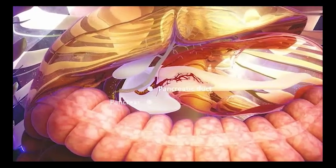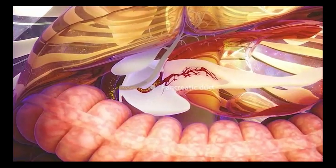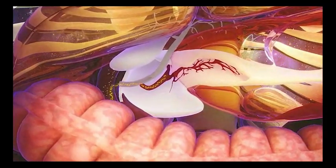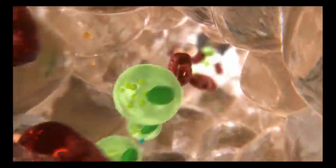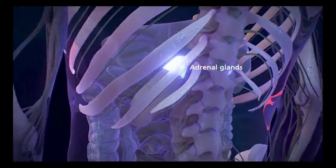The pancreas secretes insulin, which moves glucose out of the blood and into cells. Diabetes occurs when the body does not produce enough insulin to control blood sugar levels. There are two adrenal glands, one on top of each kidney.